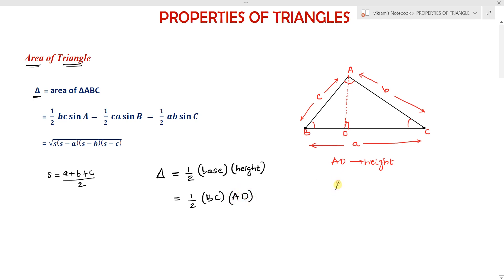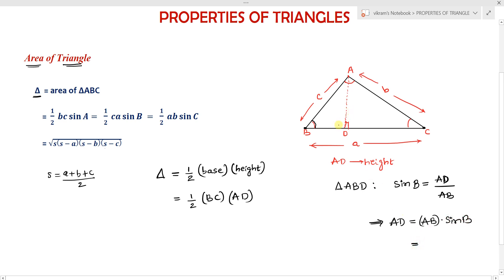Consider triangle ABD. We can write sine B as opposite over hypotenuse, which is AD divided by AB. From this, AD equals AB times sine B, where AB equals small c, so height AD equals c times sine B.